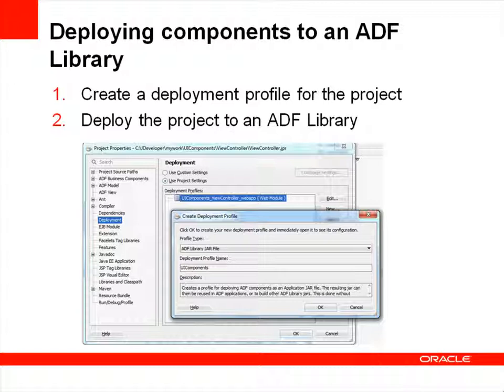To package reusable components into an ADF library, you first create a deployment profile for the project. The deployment profile specifies the archive ADF type, the name of the jar file, and the directory path where the jar will be created. After creating the deployment profile, you use the deployment wizard to deploy the project to an ADF library. Note that a project corresponds to a single ADF library jar. If you create multiple projects and want to reuse components from each, you need to create an ADF library jar for each project.